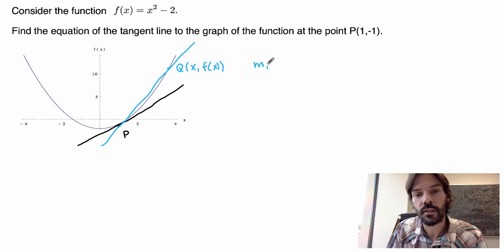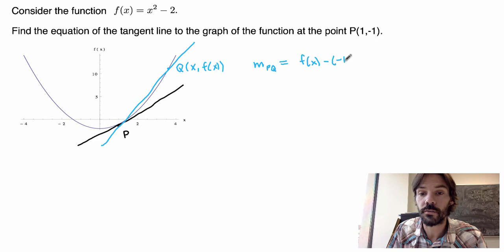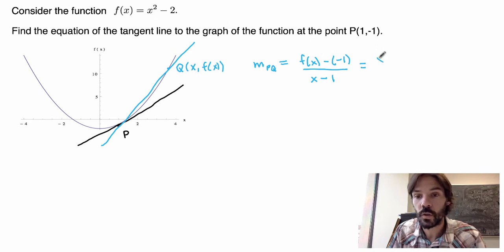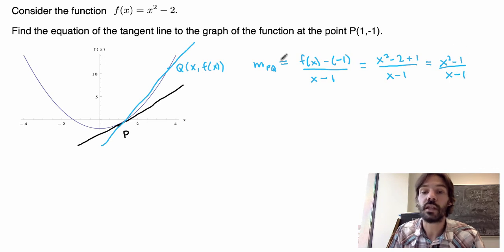Well, the easiest is to use the slope formula. So the slope of the secant line here is just the difference in y coordinates. So I get f(x) minus the y coordinate of P, which is -1, divided by the difference in x coordinates. Now I can replace f(x) by my actual function. So I get x² - 2 - (-1), that's plus 1, over x - 1. And what is this? Well, this is just (x² - 1)/(x - 1). So that gives me the slope of the secant line here.